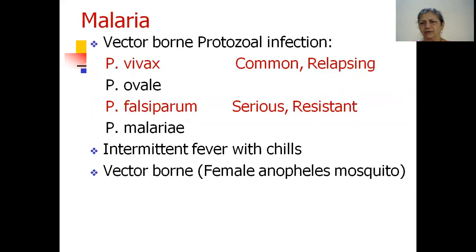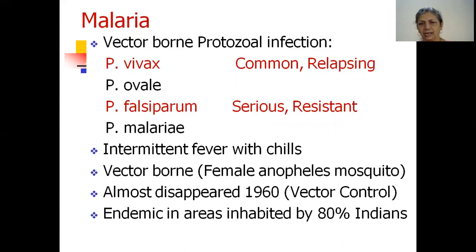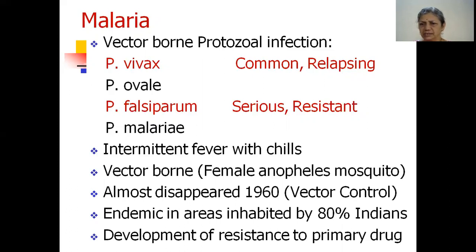Once it was known that malaria is a vector-borne infection, transmitted by the female Anopheles mosquito, India put a very strong and aggressive vector control program in place, which almost made malaria disappear around 1960. However, just as falciparum developed resistance to drugs, mosquitoes developed resistance to insecticides, so malaria has staged a comeback. Today it is endemic in areas inhabited by 80% of Indians, and the situation is becoming increasingly problematic due to development of drug resistance.